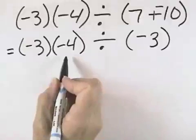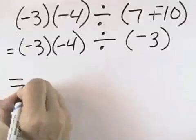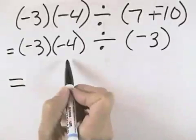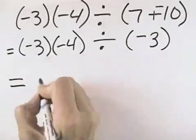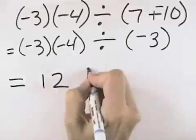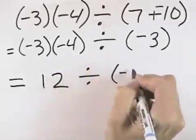The negative 3 times negative 4 occurs first, so we'll begin there. A negative times a negative is a positive, and 3 times 4 is 12. So we have 12 divided by negative 3.